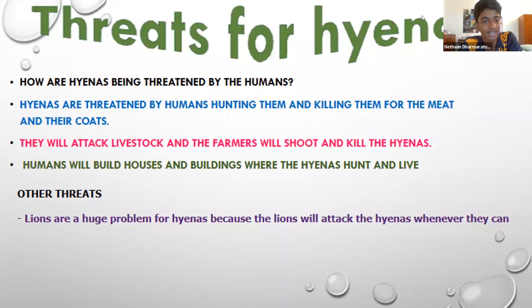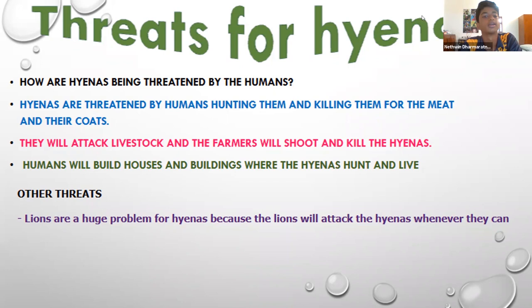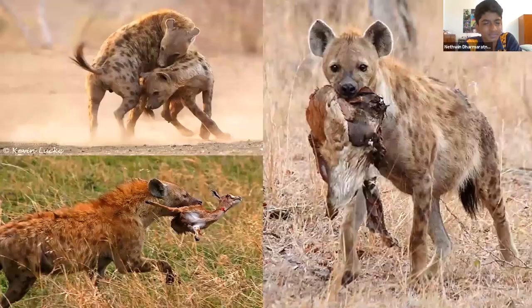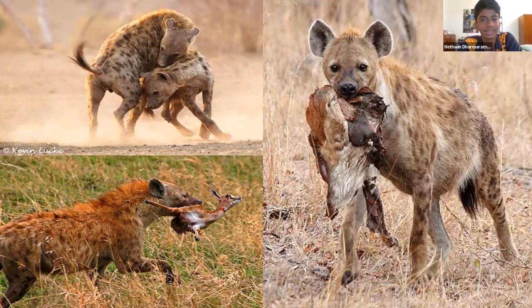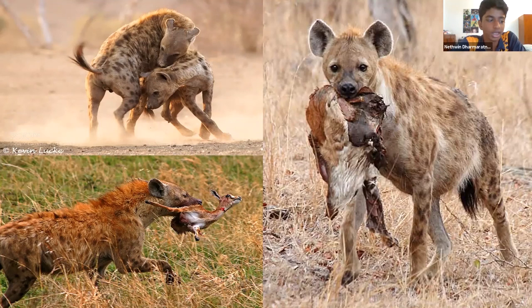Let's talk about the threats to hyenas. Hyenas are threatened by humans who hunt and kill them for their meat and coats. They will attack livestock, and farmers will shoot and kill hyenas in retaliation. Humans also build houses and buildings in areas where hyenas hunt and live, destroying their habitat. As for other threats, lions are a major problem — lions will attack hyenas whenever they can. The main threats to hyenas are humans and lions.